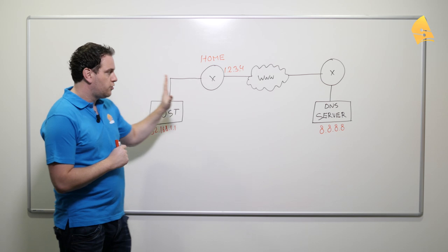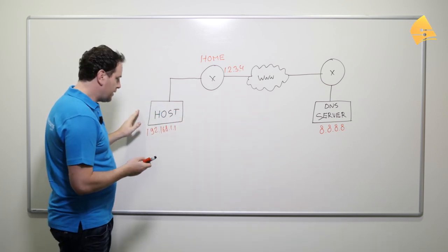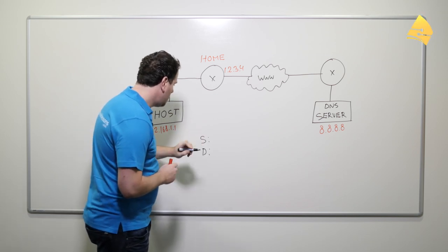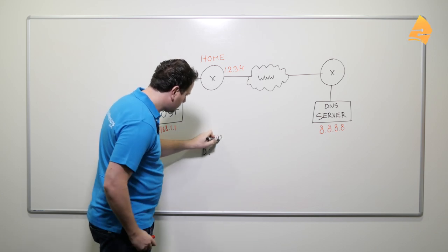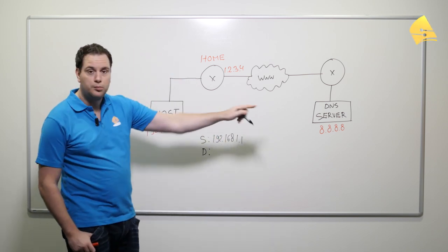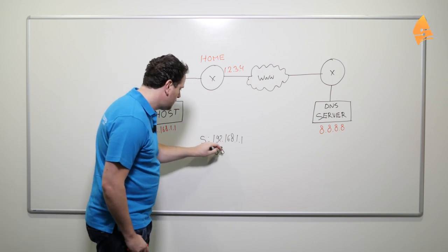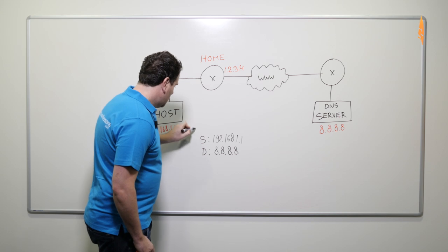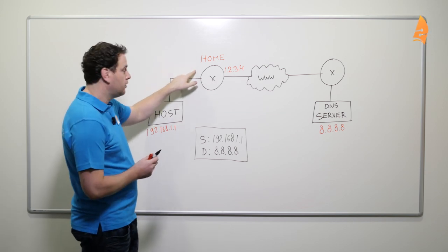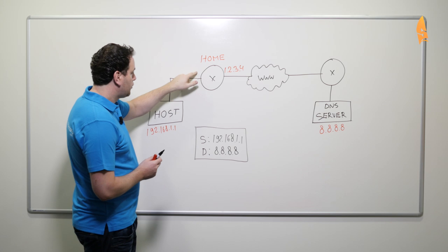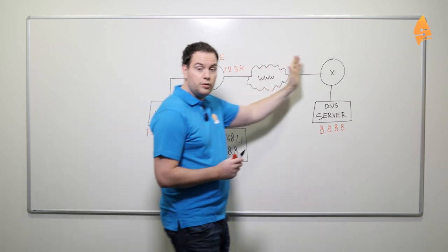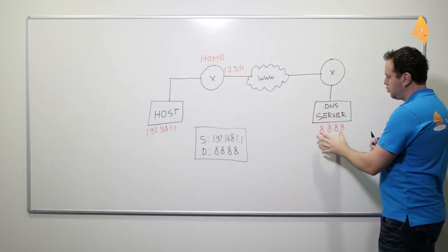When this host wants to send something to the DNS server, it will create an IP packet with a source IP which is this address over here and the destination will be 8.8.8.8. The host will forward this packet to our router. Our router will send it to its ISP and then the ISP router will route it somehow and it will end up at the other side at this router which will forward it to the server.